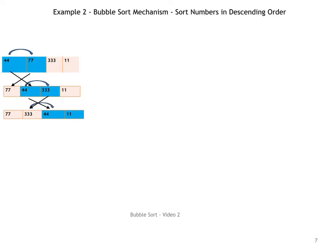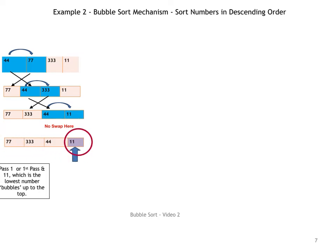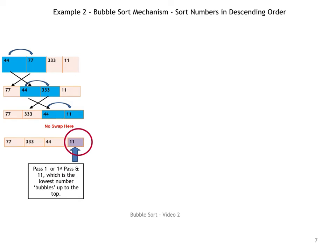Then we look at the next two numbers, 44 and 11, and we ask: is 44 less than 11? It isn't. So the array stays the same — there is no swap. We've now gone through the first pass, comparing all the numbers, and what we get is that the lowest number, 11, bubbles up to the top. After the first pass, 11 is at the end, and this is why this type of sort is called bubble sort.